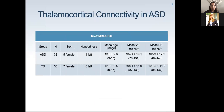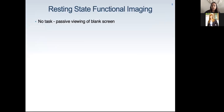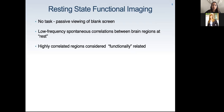For both modalities in this study, we had about 38 children and adolescents with ASD and 35 typically developing controls matched for gender, handedness, age, and IQ. Resting state functional imaging is a functional scan acquired when the participant is not engaging in any task — they passively view a blank screen. The idea is that we observe low-frequency spontaneous correlations between brain regions at rest not influenced by a specific cognitive task. Regions that are highly correlated are considered functionally related.